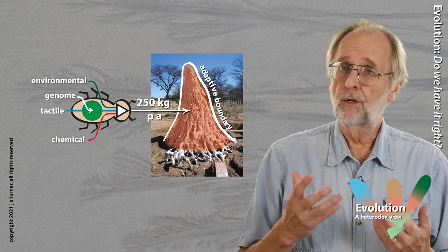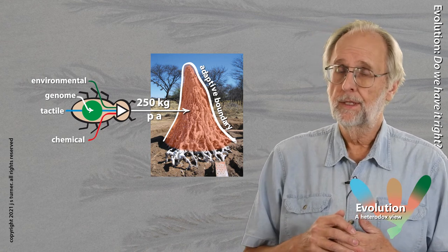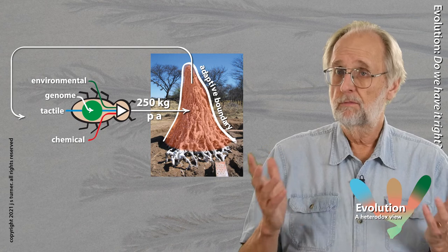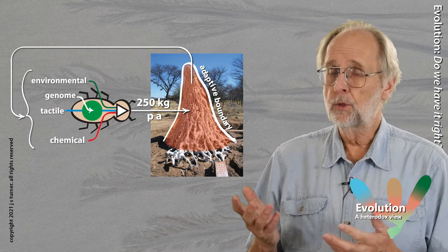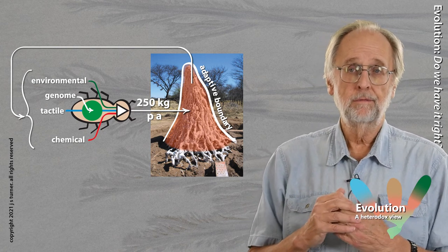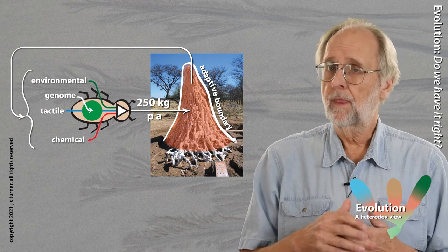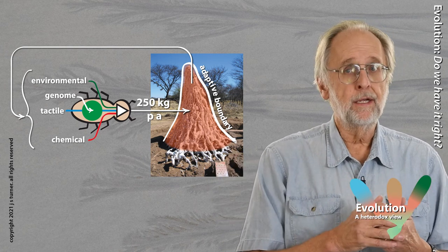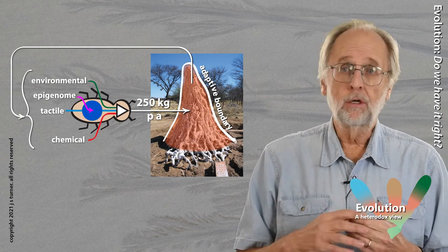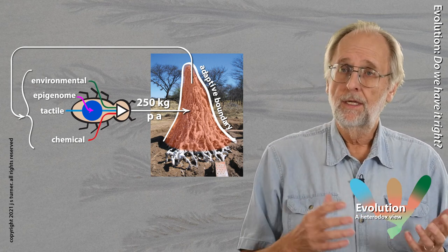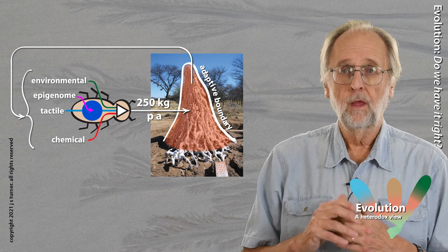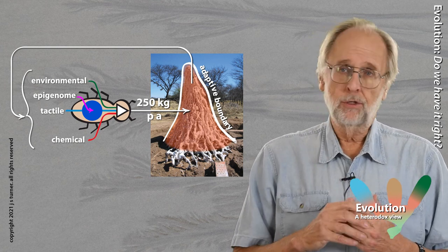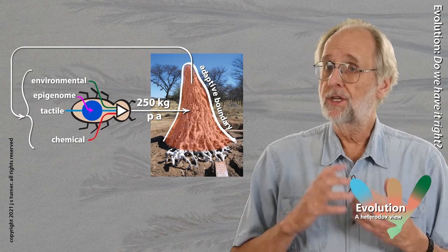Treating the mound as an extended organism complicates this simple picture considerably. Whatever the termites do to the mound feeds back onto the environment contained within the mound adaptive boundary, which affects the range of environmental, tactile, and chemical cues feeding back into the cognitive termite. This looks like a conventional negative feedback system, but the termite as cognitive being makes it more than just a simple machine. The operating system is prone to re-editing through effects on the epigenome, and this, in turn, reflects the termite's cognitive assessments of the environmental, tactile, and chemical cues it's always listening to — all affected by the termite-constructed adaptive boundary to the mound. What seems to be in control here is not so much the termite's genome, but the termite's collective cognition.